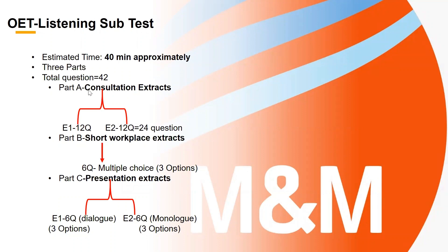In part A, there are two extracts — extract one and extract two. We can expect 12 questions per extract. That is followed by part B, where we have short workplace-related extracts with six questions each, which are three-option multiple choice type questions.